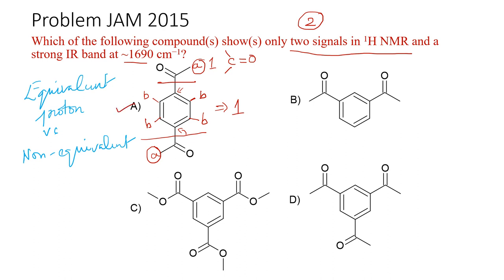Now following compound B: the methyl group here — if you consider two methyl groups, that is one signal A. Now looking at the ring, the meta positions are different. So the final ring has meta positions, meaning B is not a clean two-signal answer.